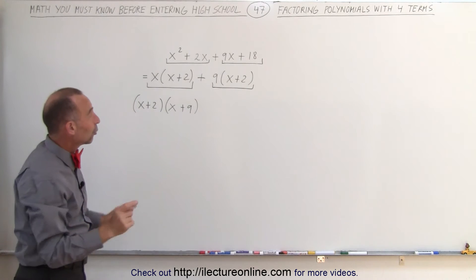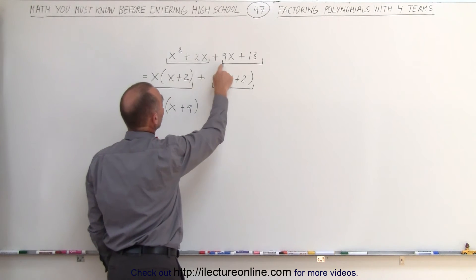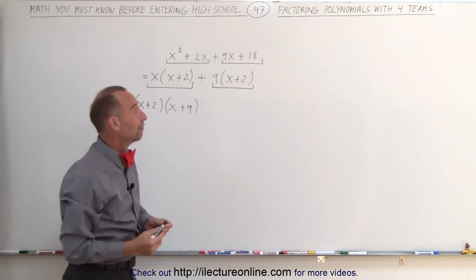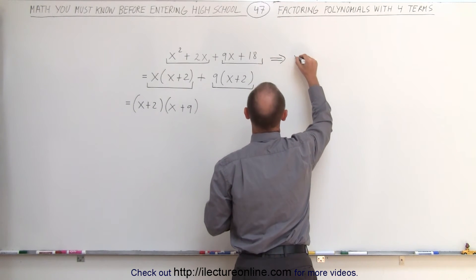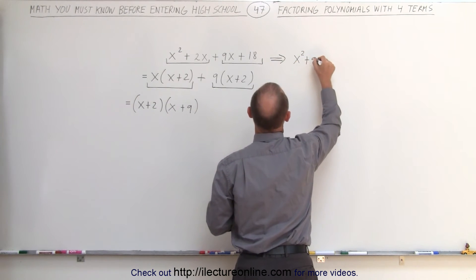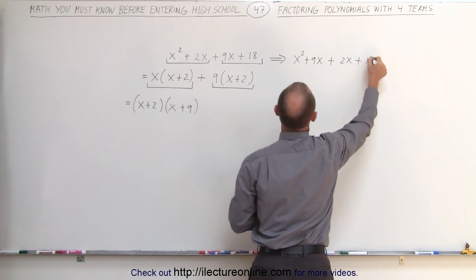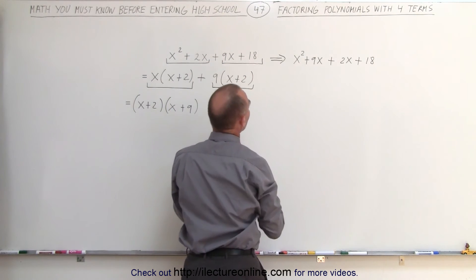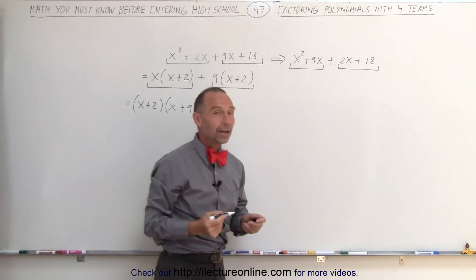Now it actually doesn't matter which way we group them together. For example, I can group the first and the third one together and the second and the fourth one together. Let me try that to see if it really makes no difference. All right, so I'm going to rewrite this as x squared plus 9x plus 2x plus 18. So now I've put the 9x here and the 2x over there. I can group these two together and group these two together exactly the same way.